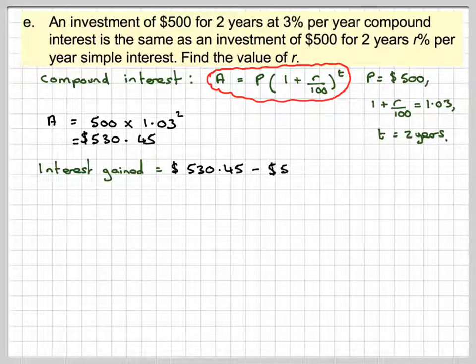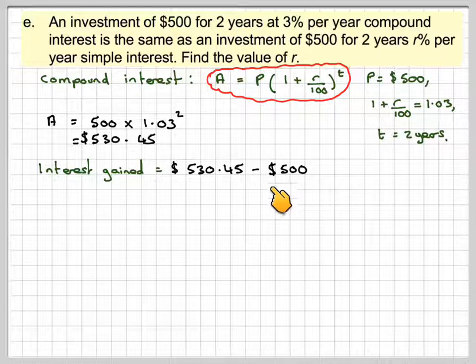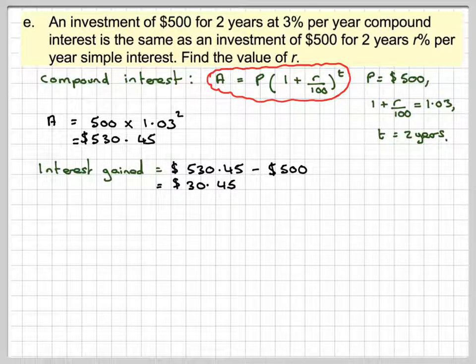The interest gained, because that's what we're finding, for the formula for simple interest, it gives me the interest gained. It's going to be the total amount, 530.45, minus the original amount, which is $30.45.